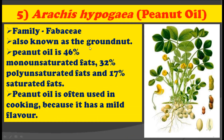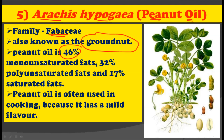The fifth plant is Arachis hypogaea, commonly called peanut, and the oil obtained from this plant is called peanut oil. This plant belongs to the family Fabaceae. It is also known as groundnut. This peanut oil contains 46% monounsaturated fats, 32% polyunsaturated fats, and 17% saturated fats. Peanut oil is often used for cooking because of its mild flavor.